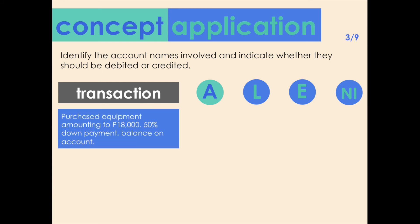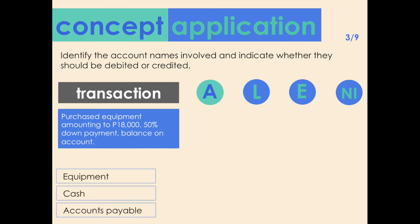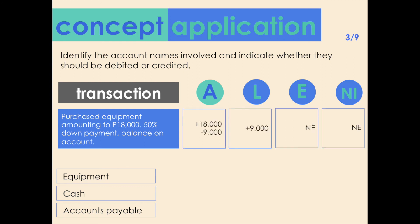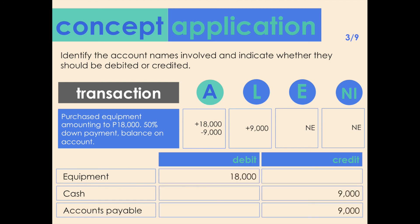Transaction three: purchased equipment amounting to 18,000 pesos — 50% down payment, balance on account. Accounts affected: equipment, cash, and accounts payable. Assets increase by 18,000 due to equipment but are partially decreased by the cash payment of 9,000. Liabilities increase by 9,000 due to the unpaid balance. The increase in equipment of 18,000 is debited; the decrease in cash is credited; and the increase in accounts payable is also credited. Both debits and credits are equal.